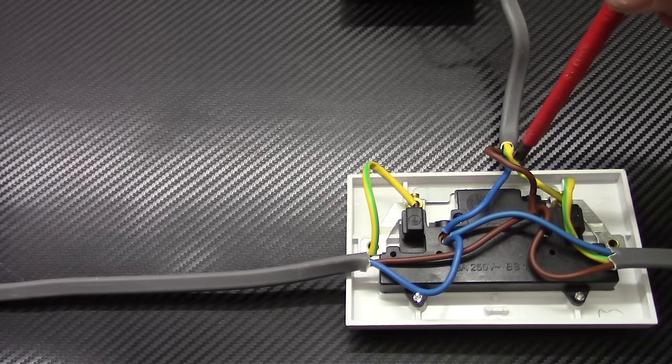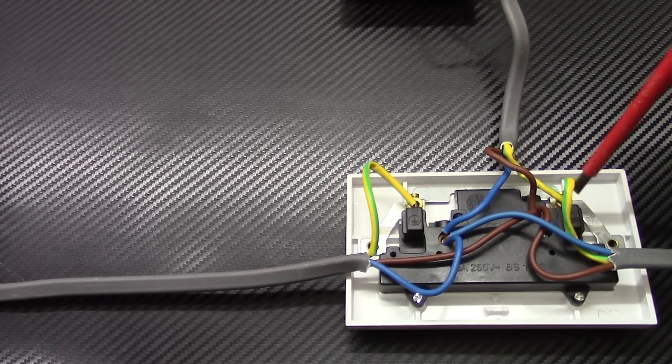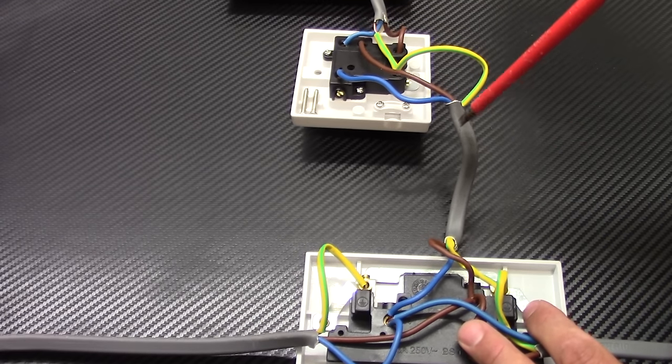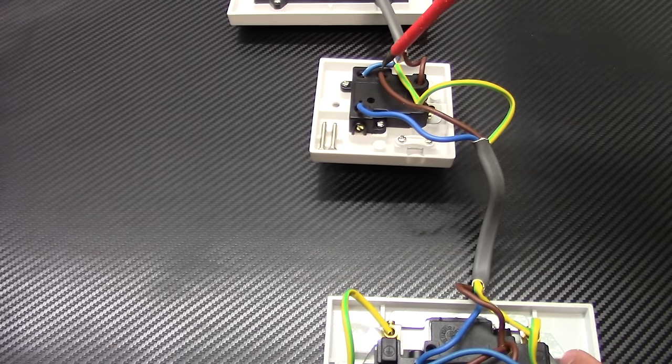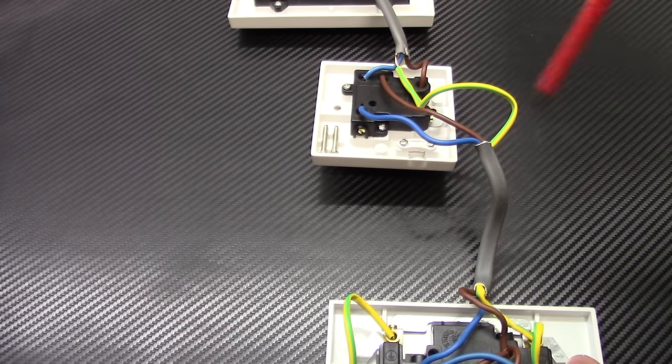We took live from the live terminal. And we connected two earthing wires to the earthing terminal. Then we connected all the wires to the supply side in the FCU. Coming from this socket outlet.